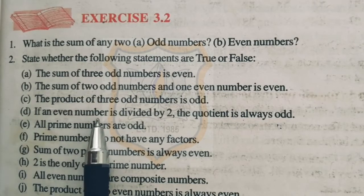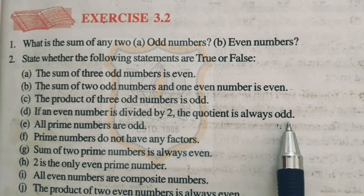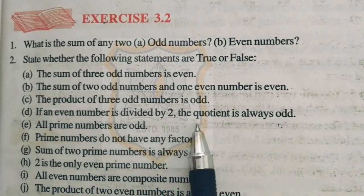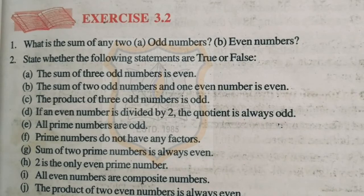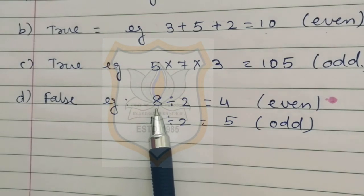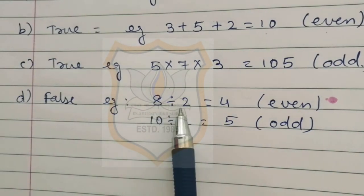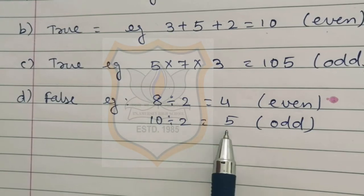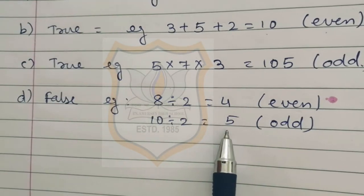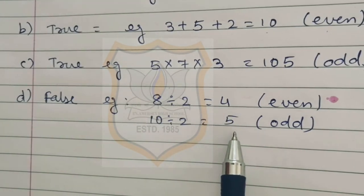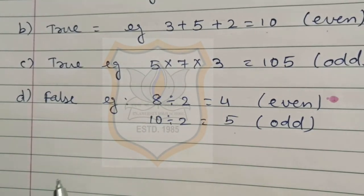Part D: if an even number is divided by 2, the quotient is always odd. The statement is false. For example, 8 divided by 2 is 4, which is an even number. But 10 divided by 2 is 5, which is odd. So we may get either an even or an odd number by dividing an even number by 2. The statement is false.